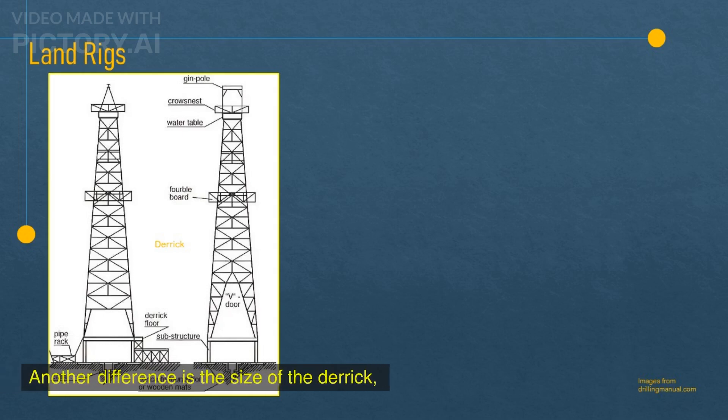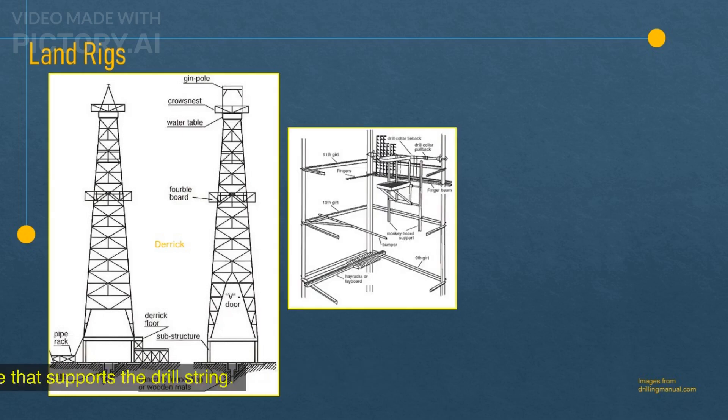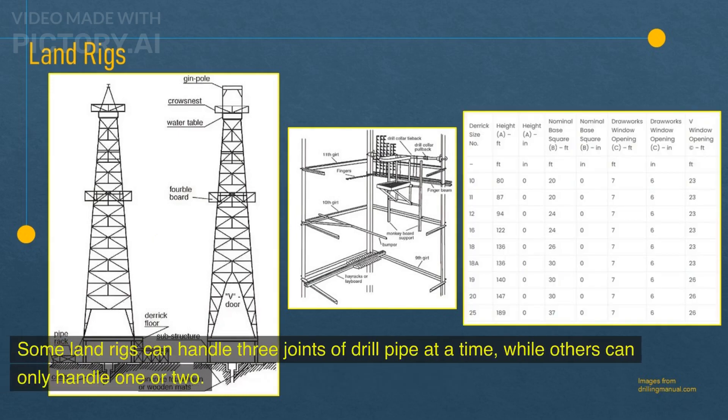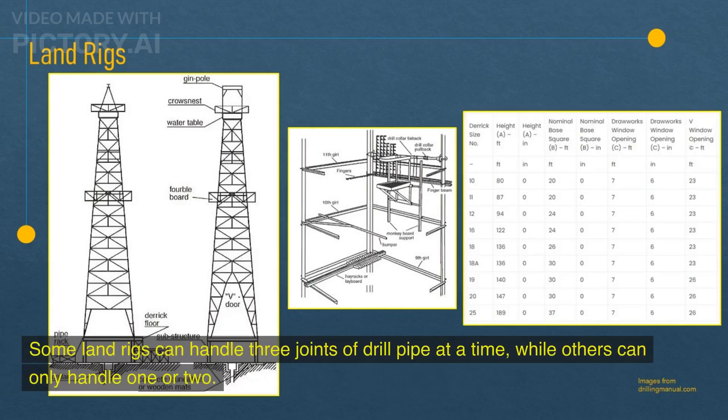Another difference is the size of the derrick, which is the tall structure that supports the drill string. Some land rigs can handle three joints of drill pipe at a time, while others can only handle one or two.